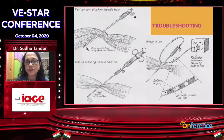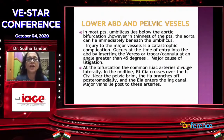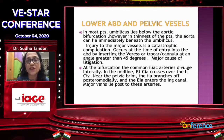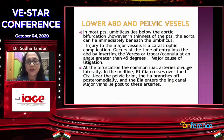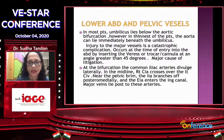In most patients, the umbilicus lies below the aortic bifurcation. But in thin patients, the aorta can lie immediately beneath the umbilicus — this is really catastrophic if you damage the aorta. Injury to the major vessels is catastrophic and can occur at the time of entry with either the Veress needle or the trocar, and could be a cause of litigation. At the bifurcation, the common iliac arteries diverge laterally. In the midline, the right common iliac artery crosses over the left common iliac vessel, and near the pelvic brim, the internal iliac artery branches off posterior-medially. The major veins lie posterior to these arteries.